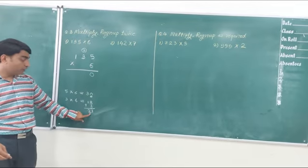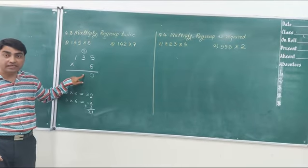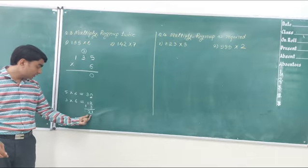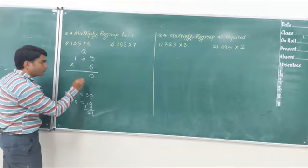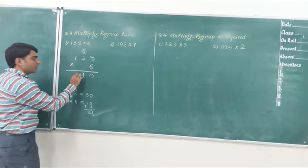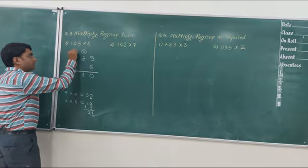Now we need to regroup 21 because here we can write only 1 digit. And here it is a 2-digit number. So 1 will be written here and 2 will be carried to the next place.